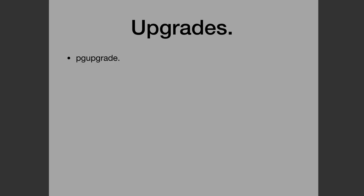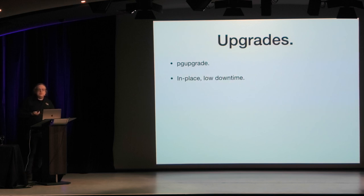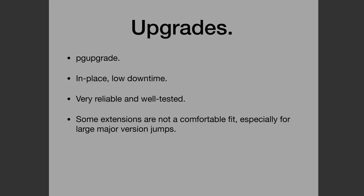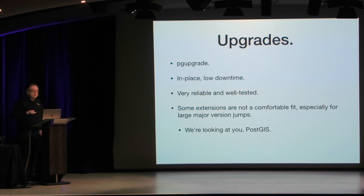For upgrades at this point, you're probably going to want to use pg_upgrade rather than dump restore. It has the advantage that you can run it in place - everybody uses the link mode, which is an in-place upgrade. It's very reliable and well tested. The only issue is there are some extensions that aren't a comfortable fit, especially for large major version jumps - some like PostGIS can be a problem on pg_upgrade. But if you're using largely stuff that's in the main distribution and contrib, you'll be fine.